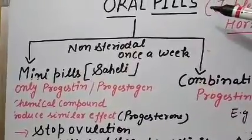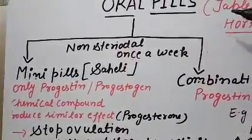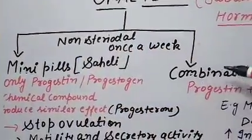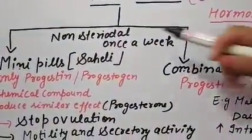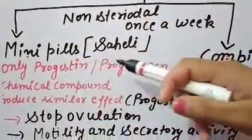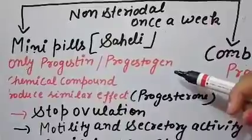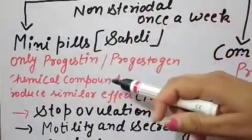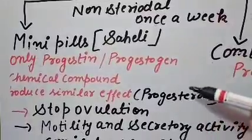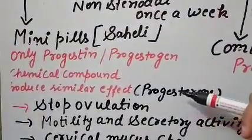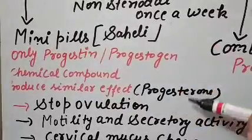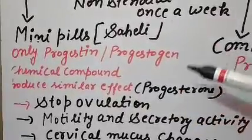There are two categories of oral pills. First are known as mini pills and second are combination pills. In mini pills there is only progestin, or progestogen — a chemical compound similar to the progesterone hormone of the human female, producing the same effect as progesterone.